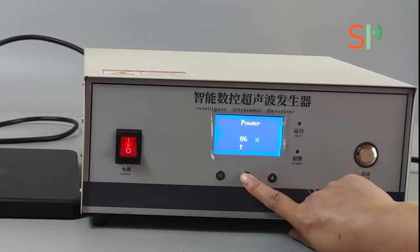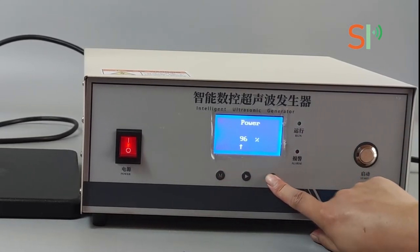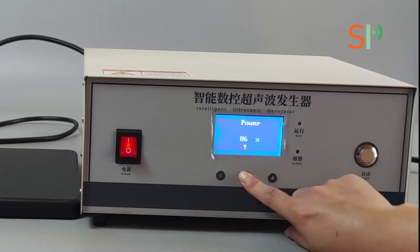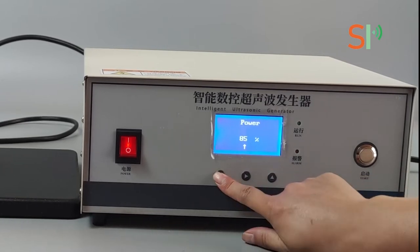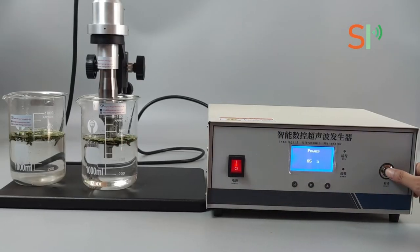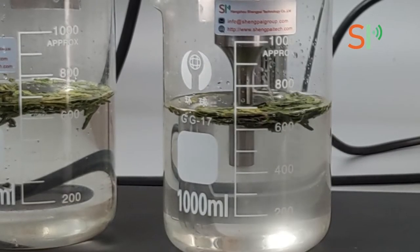Our ultrasonic sonicator is mainly composed of two parts: an ultrasonic generator and an ultrasonic transducer with booster and probe. They are connected via dedicated cable.